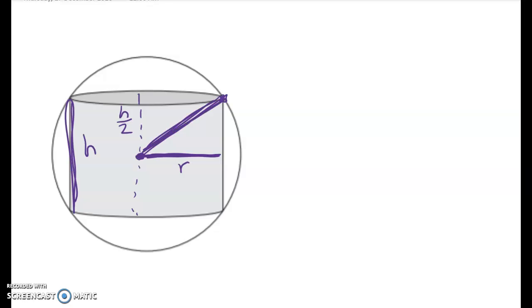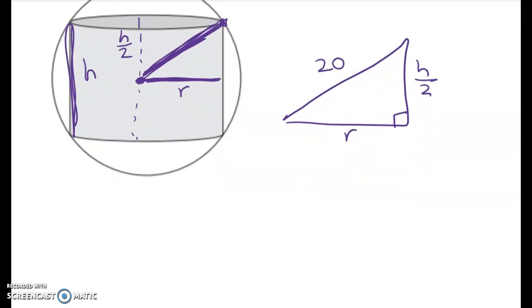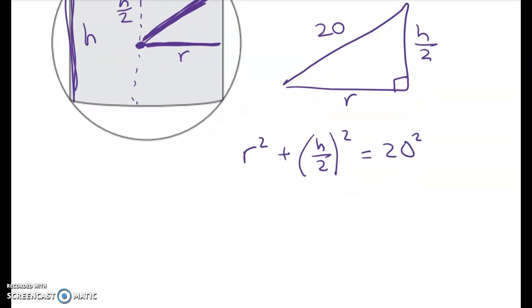And we know that this distance here must be 20. So that gives me a right-angle triangle that looks like this. I've got R here. I've got 20 here. And I've got H on 2 here. So that gives me my link between R and H. We can say that R squared plus H on 2 squared is equal to 20 squared.